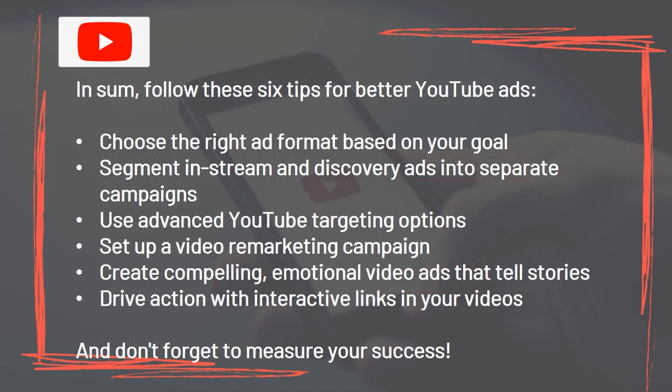In summary, follow these 6 tips for better YouTube ads: Choose the right format based on your goal. Segment in-stream and discovery ads into separate campaigns. Use advanced YouTube targeting options. Set up a video remarketing campaign. Create compelling emotional video ads that tell stories. Drive action with interactive links in your videos. And don't forget to measure your success.